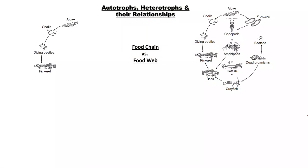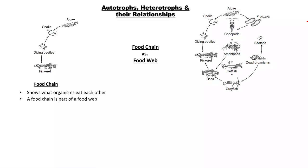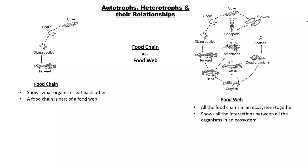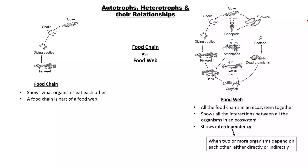Let's look at how all these relationships fit together. The best way is not a food chain, which is simply just one pathway. The best way to look at all the interactions in an ecosystem is a food web — it's all the food chains in an ecosystem together. It shows all the interactions between all the organisms in an ecosystem, and also shows interdependency — organisms directly or indirectly rely on each other.